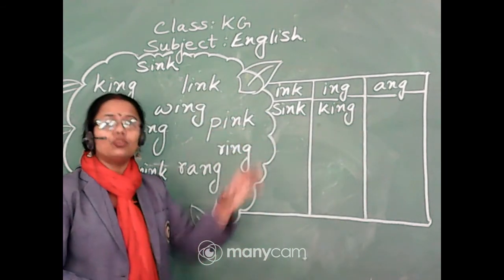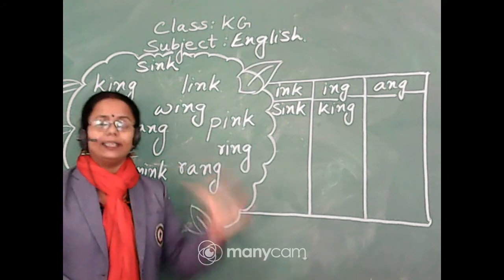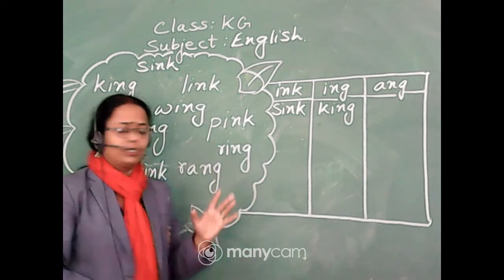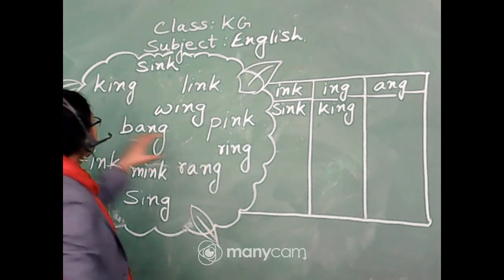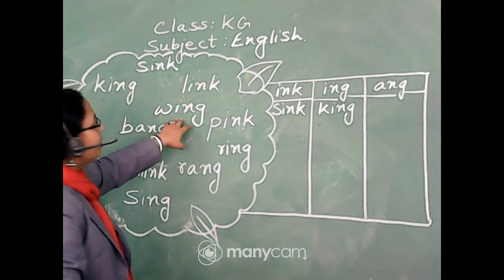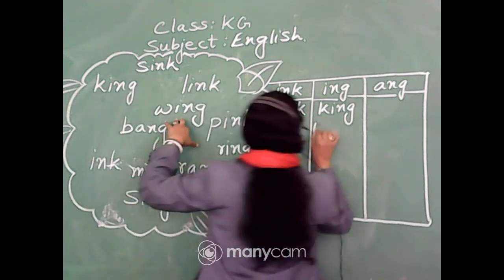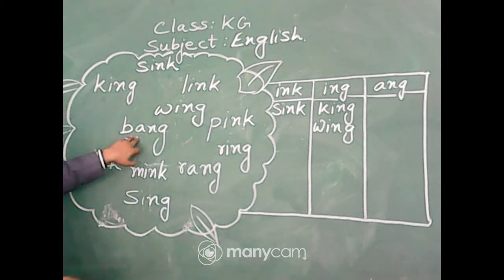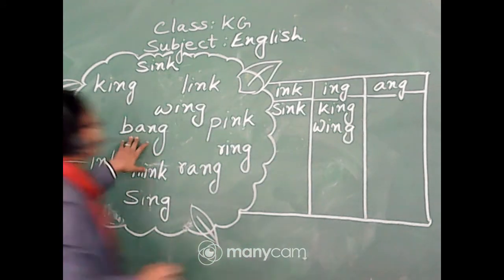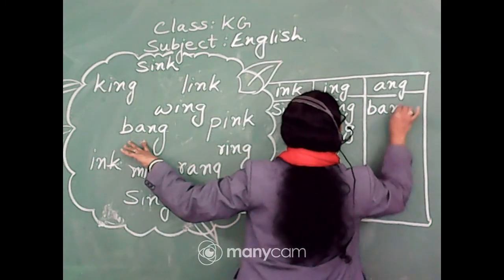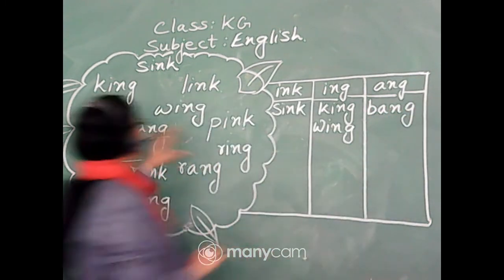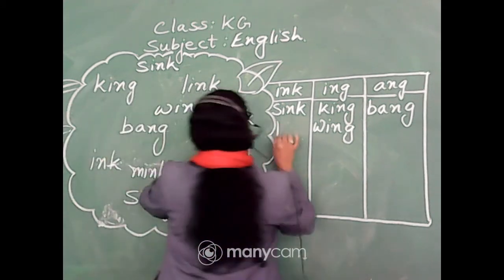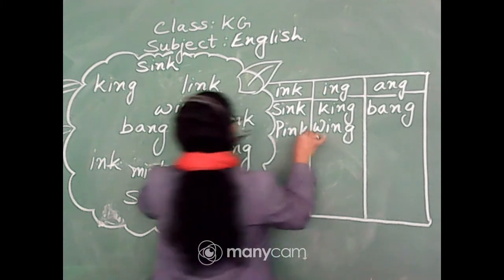So here we are doing the practice to sort out which are the -ink, which are the -ing, and which are the -ang sound words. Next comes wing, w-i-n-g. And next is bang, b-a-n-g. Next is pink.